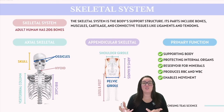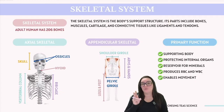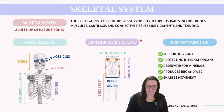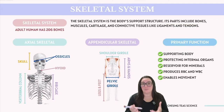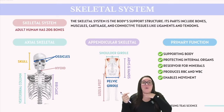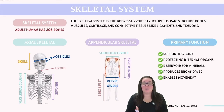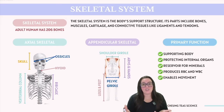An adult typically has 206 bones. Interestingly, babies are born with slightly more bones, which often fuse together as they grow into adulthood. The human skeletal system is categorized into two main parts: the axial skeleton and the appendicular skeleton. The axial skeleton forms the central axis of our body and comprises the skull bones, the ossicles within our ears, the hyoid bone found in our throat, the vertebral column, and our ribcage. This structure not only supports our head and neck movements and helps facilitate breathing, but also provides a foundational base for the appendicular skeleton.